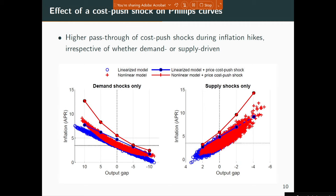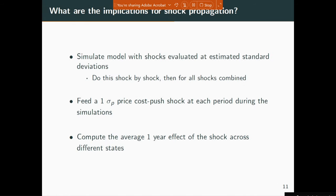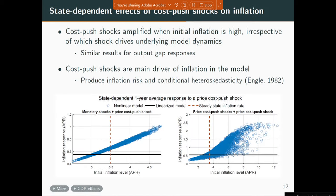For those familiar with the Smets-Wouters model, it has seven different types of shocks — TFP shocks, financial shocks, government spending shocks, investment-specific shocks, and more. We go through each shock at a time. We simulate a long time series for inflation and the output gap using, say, a monetary policy shock, and at each point add a little markup shock to see the amplification. We redo this for financial shocks and government spending shocks. In all cases, for all shocks in the model, cost-push shocks are amplified when inflation is high to begin with.